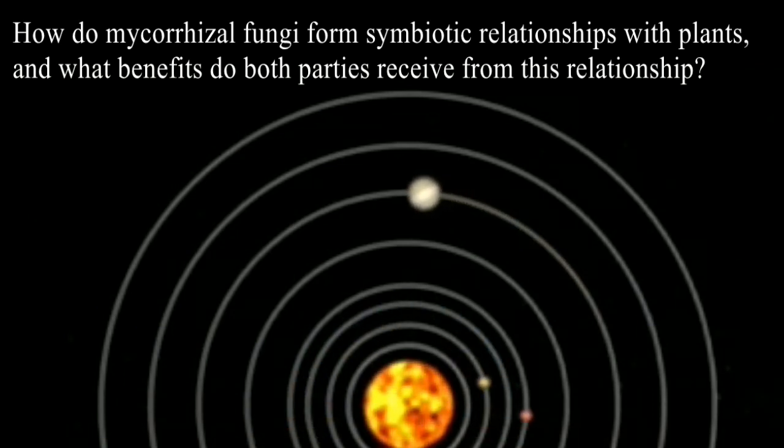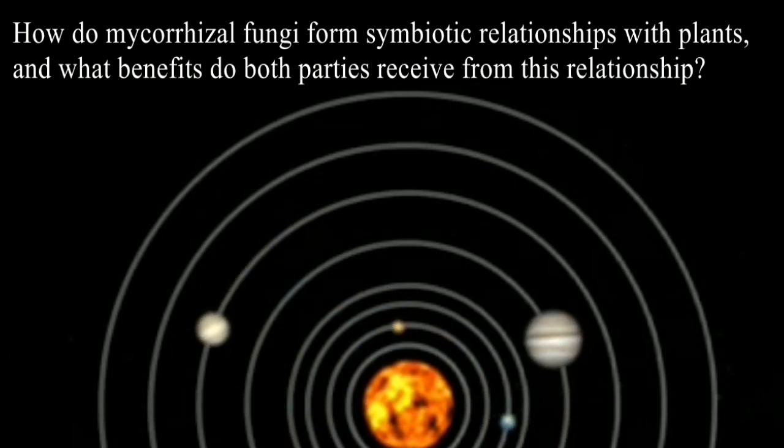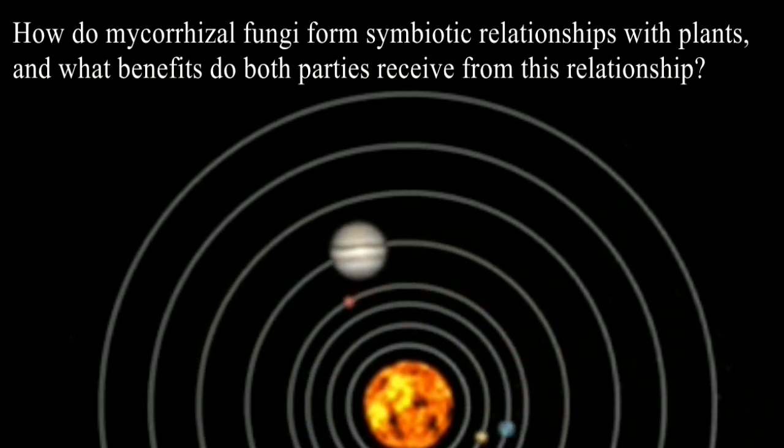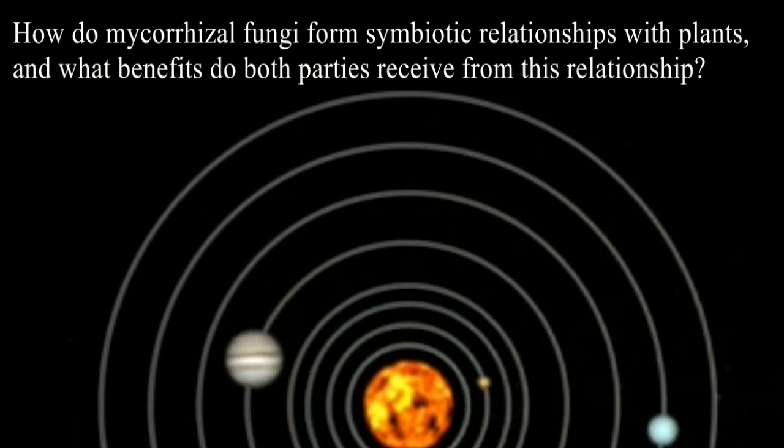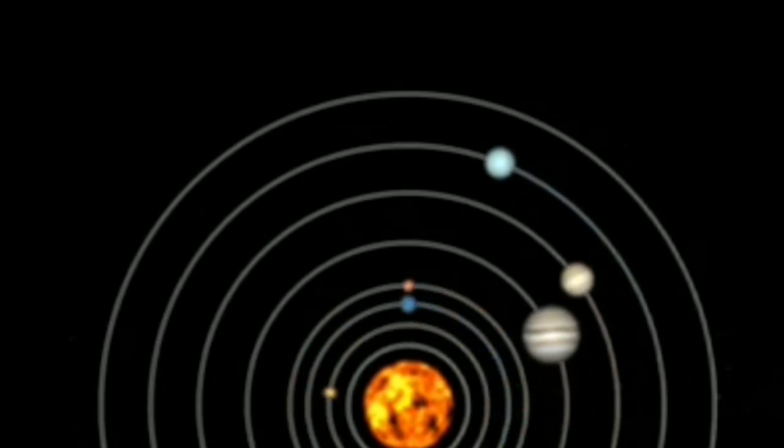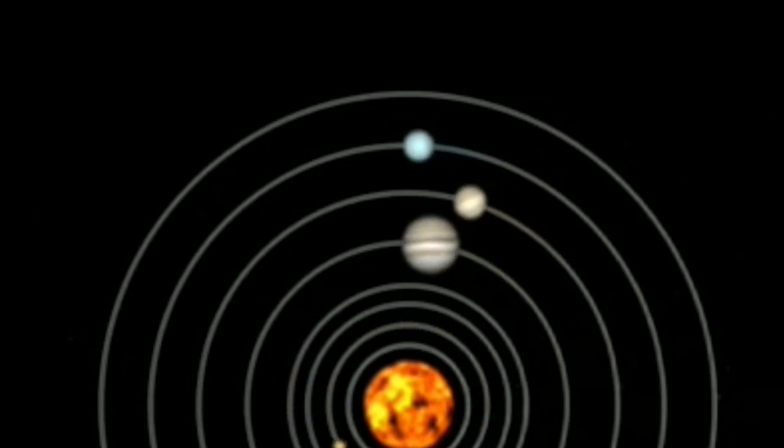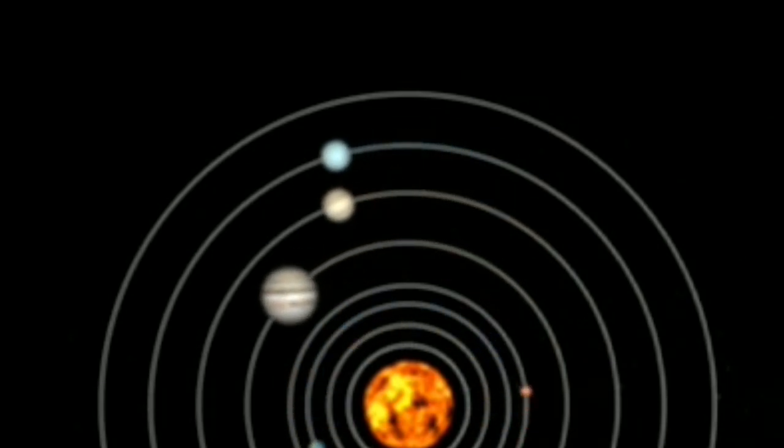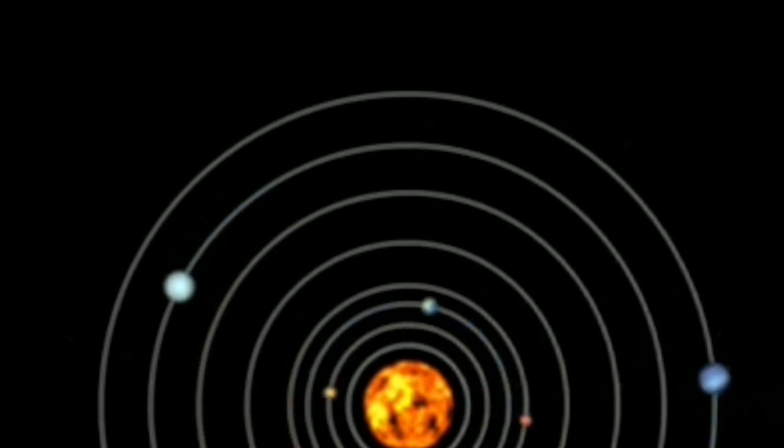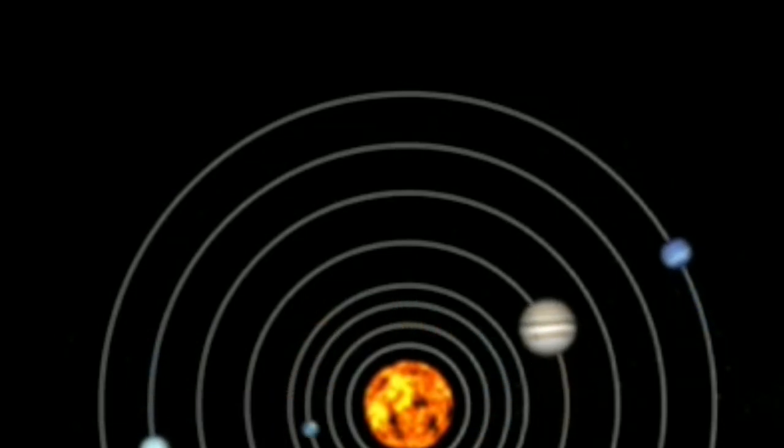You can answer in that way: mycorrhizal fungi form symbiotic relationships with plant roots by exchanging nutrients and water. The fungi provides the plant with essential nutrients such as phosphorus and nitrogen by absorbing them, while the plant provides the fungi with food, shelter, sugars, and other organic compounds.